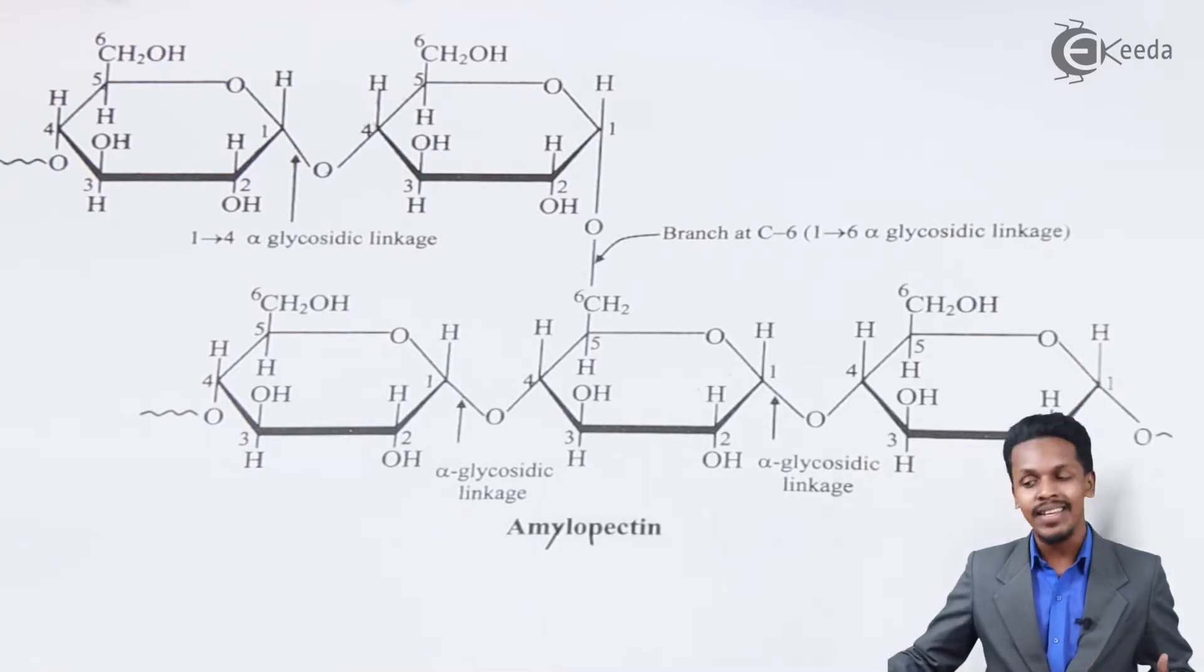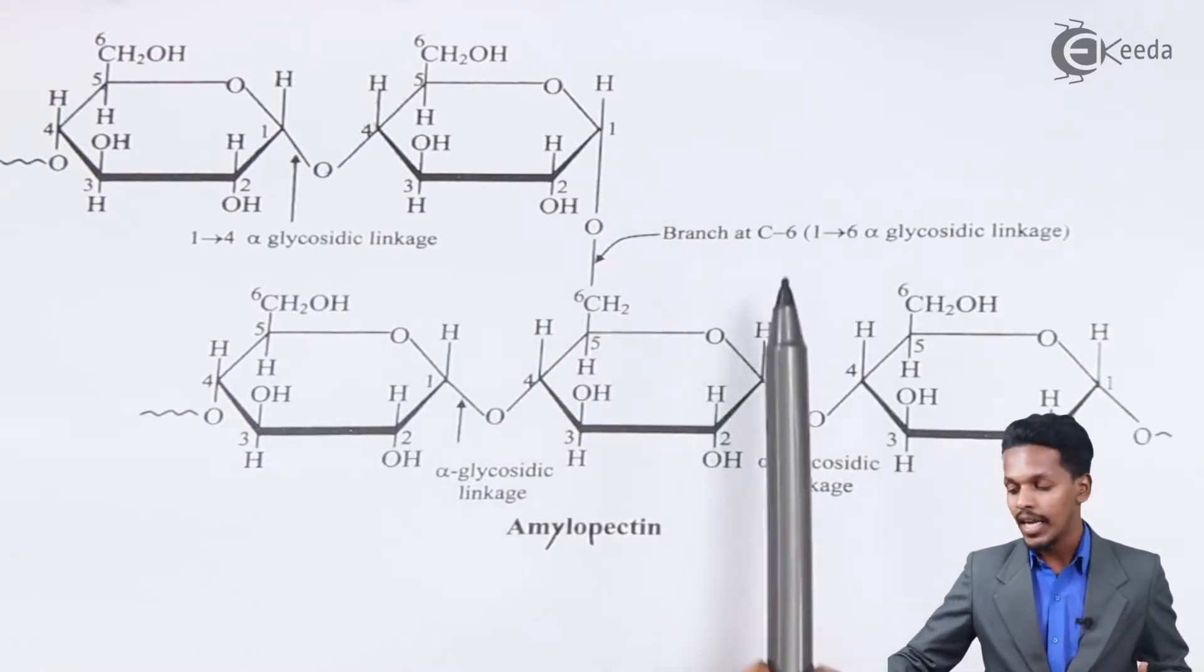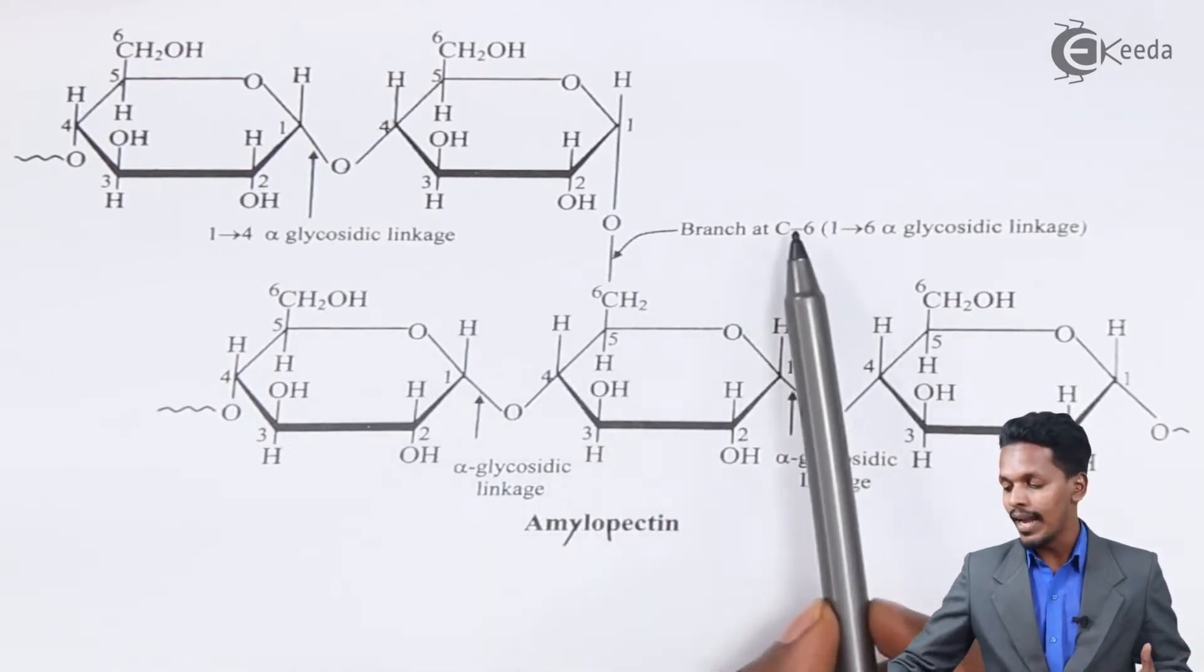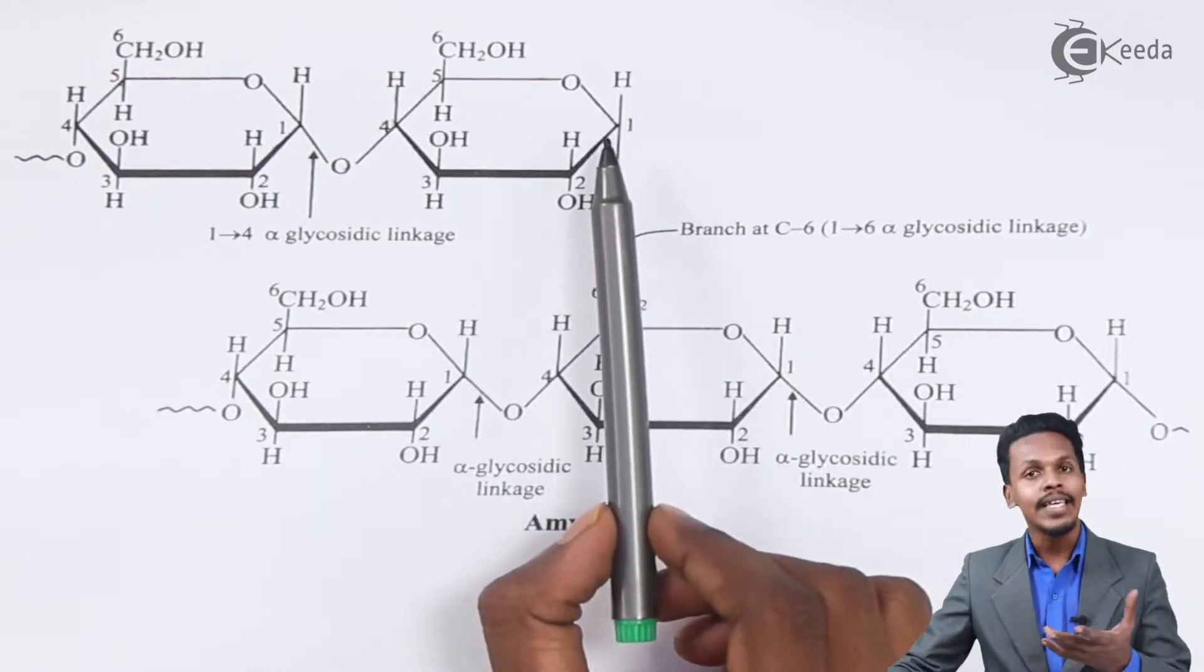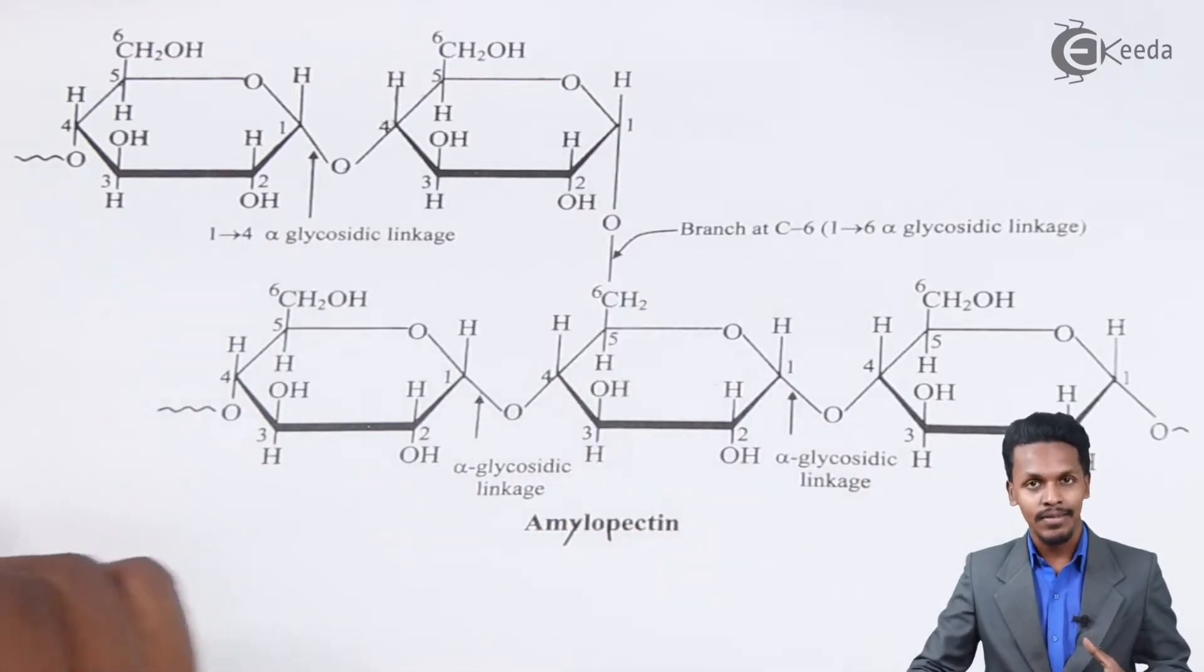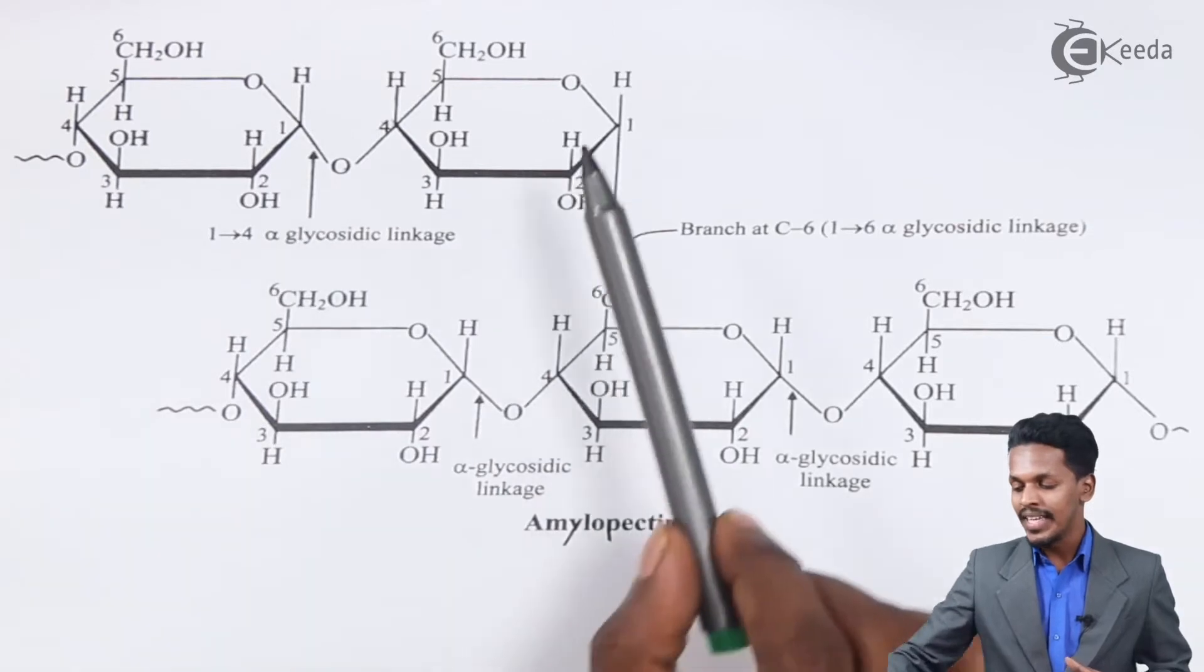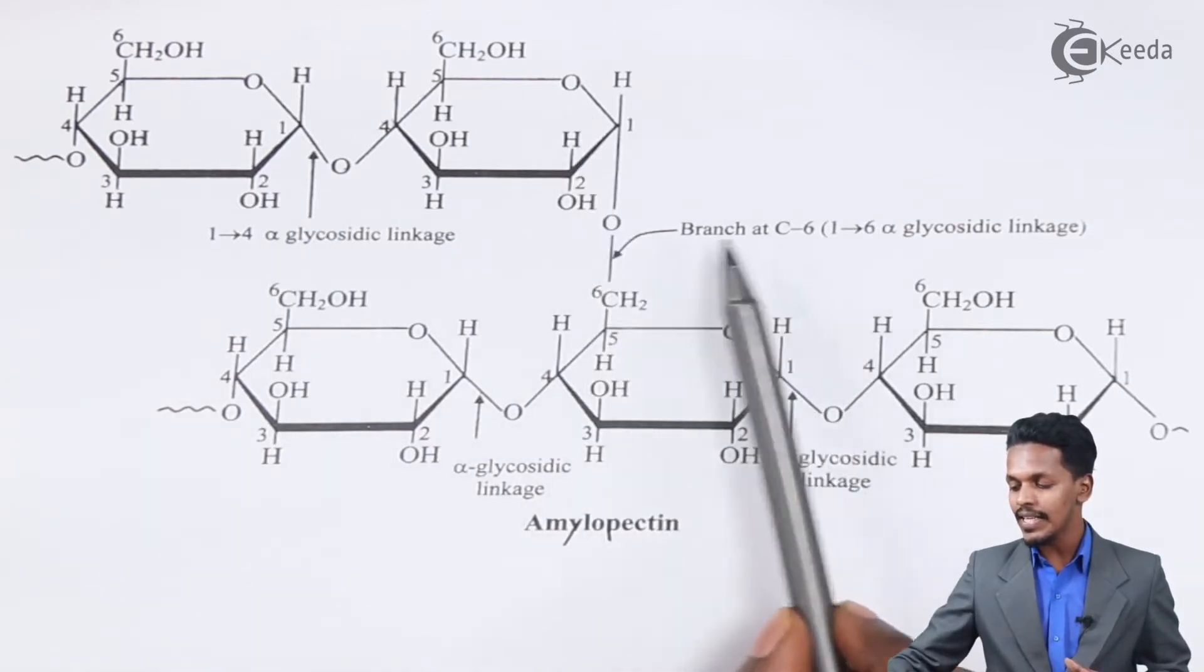...how it is not only linear, but we can find branching between carbon number 6 of one monosaccharide molecule linking with carbon number 1 of another monosaccharide, forming a polysaccharide. We can find a branch between carbon 6 and carbon 1.